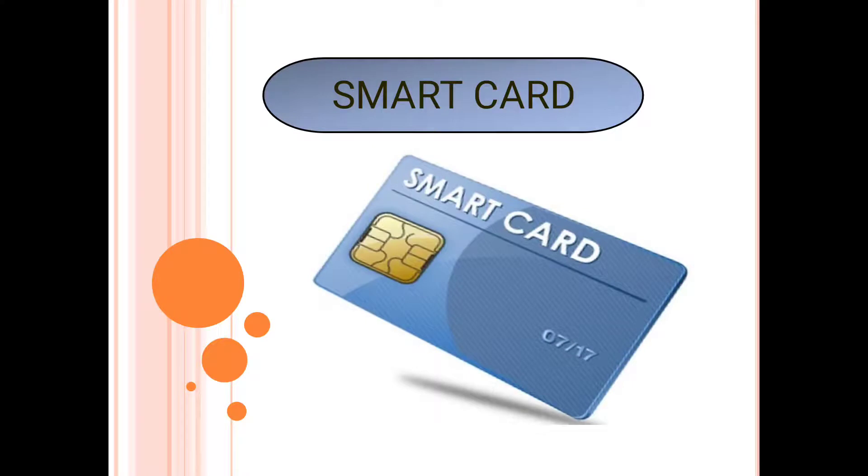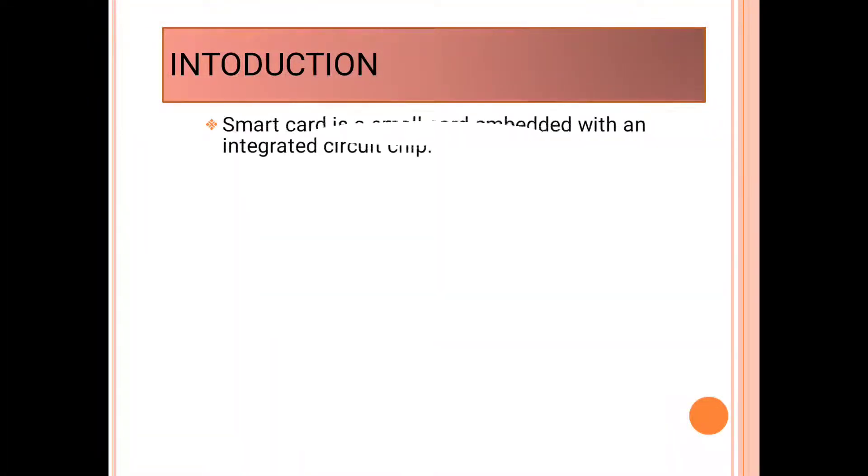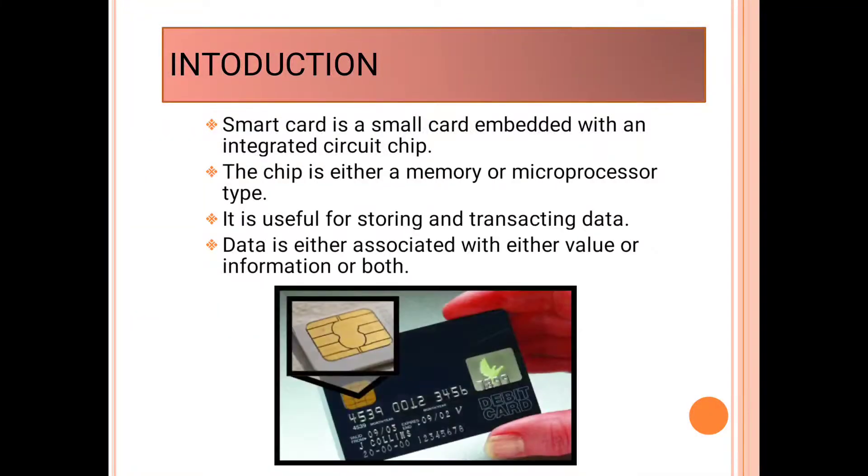The next topic of my discussion is smart card. About smart card, I will give its introduction, smart chip design, its construction, dimensions, types, applications, benefits, advantages, and disadvantages. First is introduction of smart card. Smart card is a small card embedded with an integrated circuit chip. As we can see in the picture, a small chip of golden color is smart chip in the card. The chip is either memory or microprocessor type. It is useful for storing and transacting data. The data can be in the form of value, information, or both.